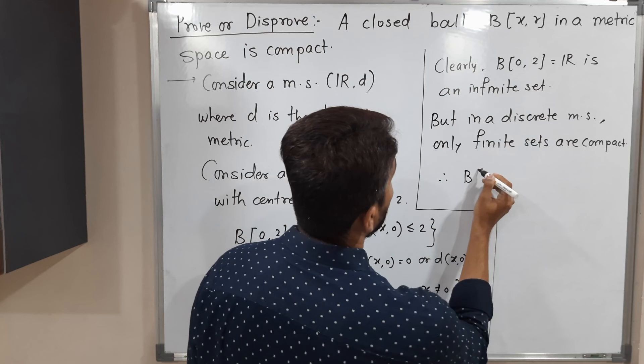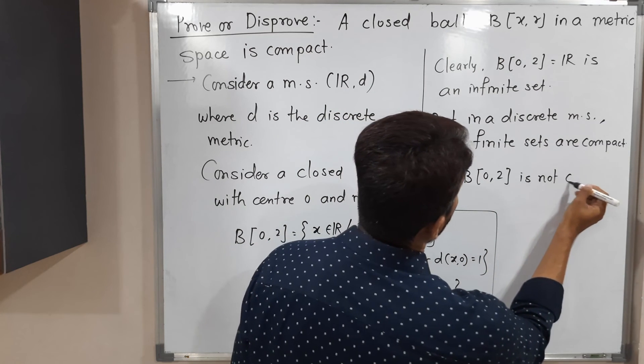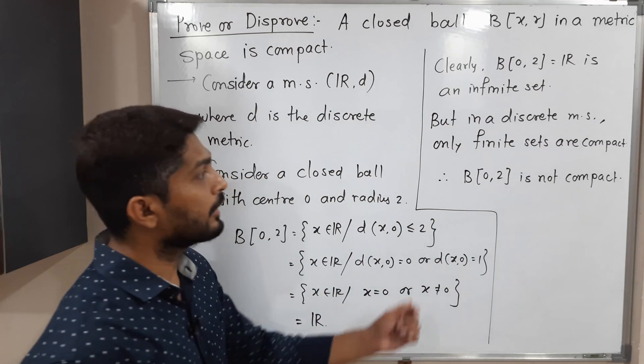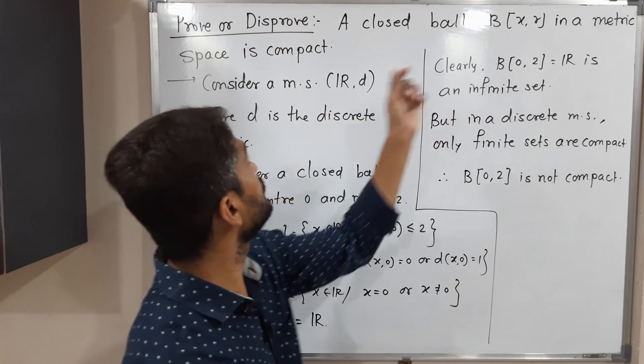Therefore, B(0,2) is not compact. So that means we got a closed ball which is not compact. That means the given statement is not true. Yes, the solution is over.